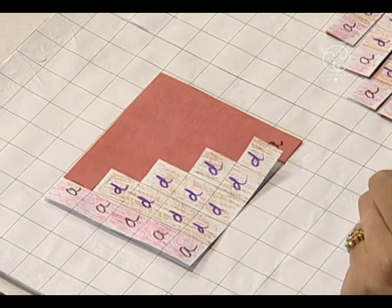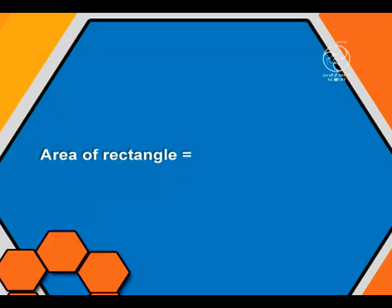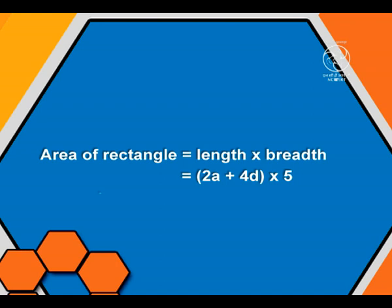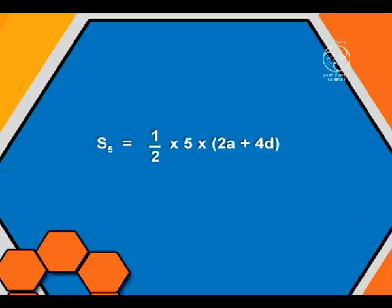So the sum of first 5 terms of this AP will be half of the area of this rectangle. The area of a rectangle is equal to length into breadth. The length of this rectangle is 2A plus 4D units and the breadth is 5 units. So the area is (2A plus 4D) into 5 square units. Now S5 will be half of this area, so half into 5 into (2A plus 4D), which is equal to half into 5 into (2A plus (5 minus 1) into D).